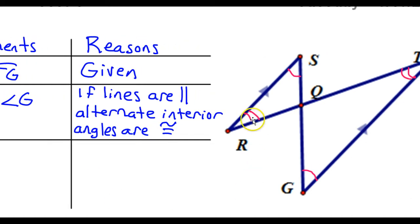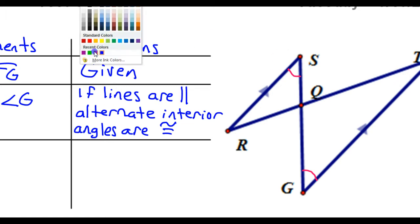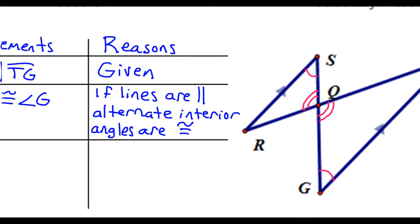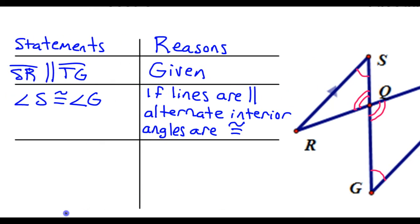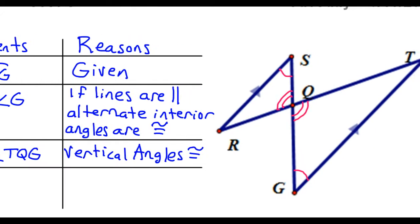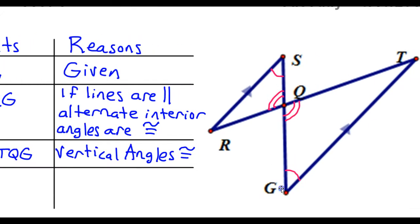Now I need another pair of angles. I could either use another pair of alternate interior angles, or I could use vertical angles. I'll actually use vertical angles just because it's easier to write the vertical angle theorem than to write all that again — I'm all about efficiency. So: angle SQR is congruent to angle TQG because vertical angles are congruent.